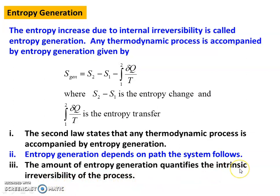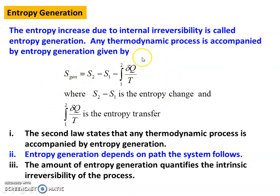Entropy generation depends on the path the system follows. The amount of entropy generation quantifies the intrinsic — meaning internal — irreversibility of the process. When there is heat transfer from the system to the surrounding, there will be entropy transfer. To remember: entropy generation is the increase of entropy due to internal irreversibility, along with its equation.